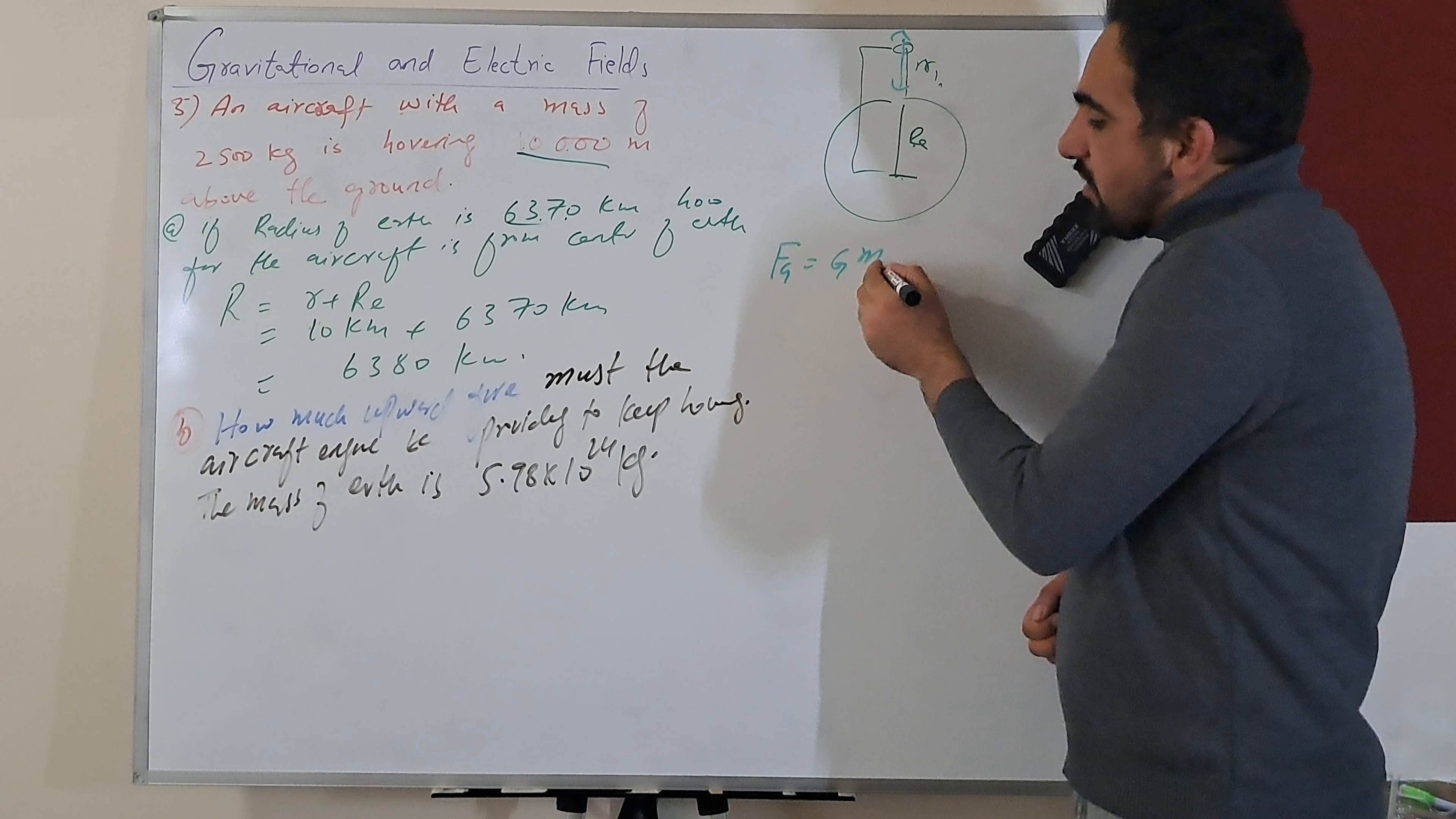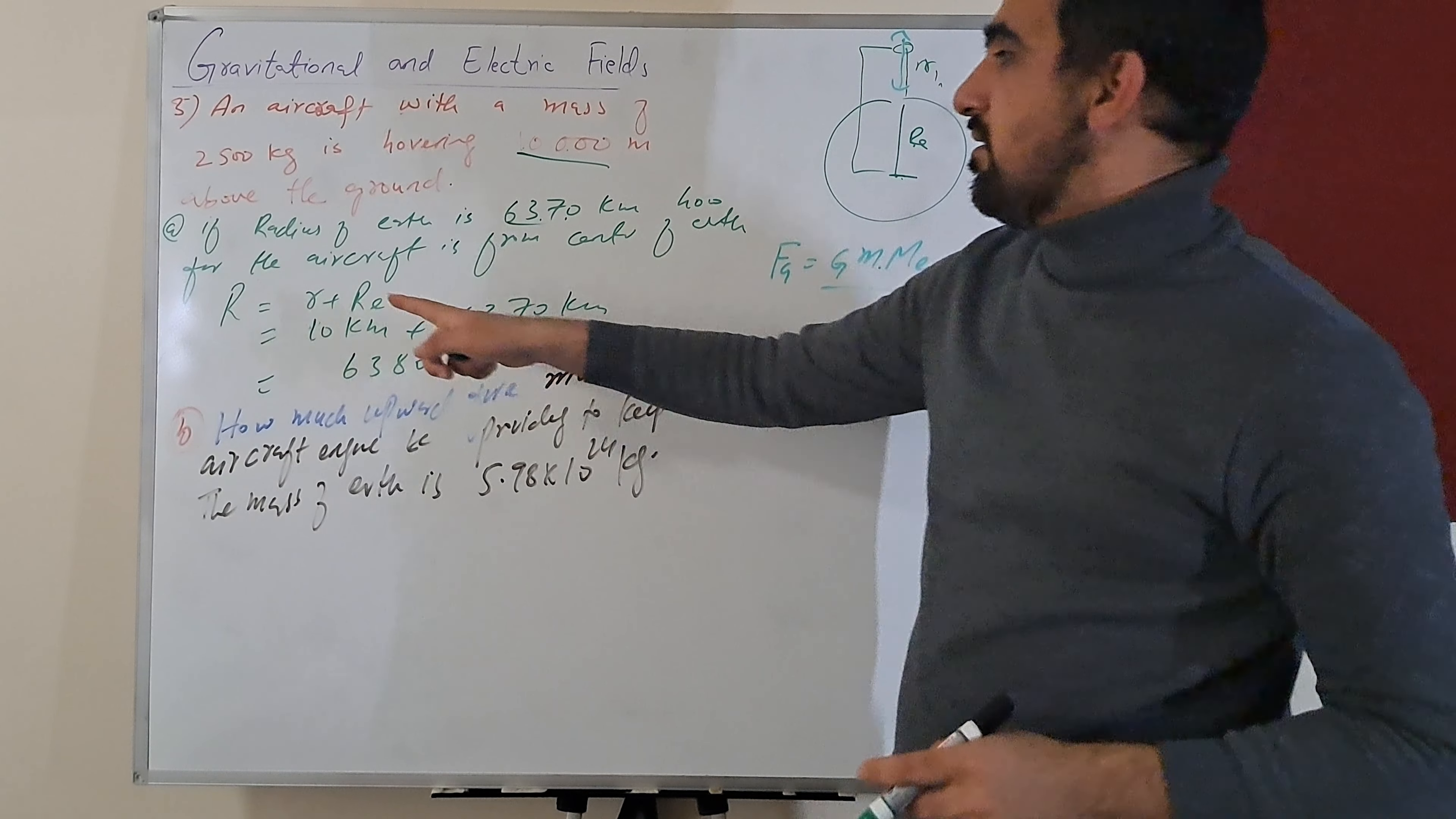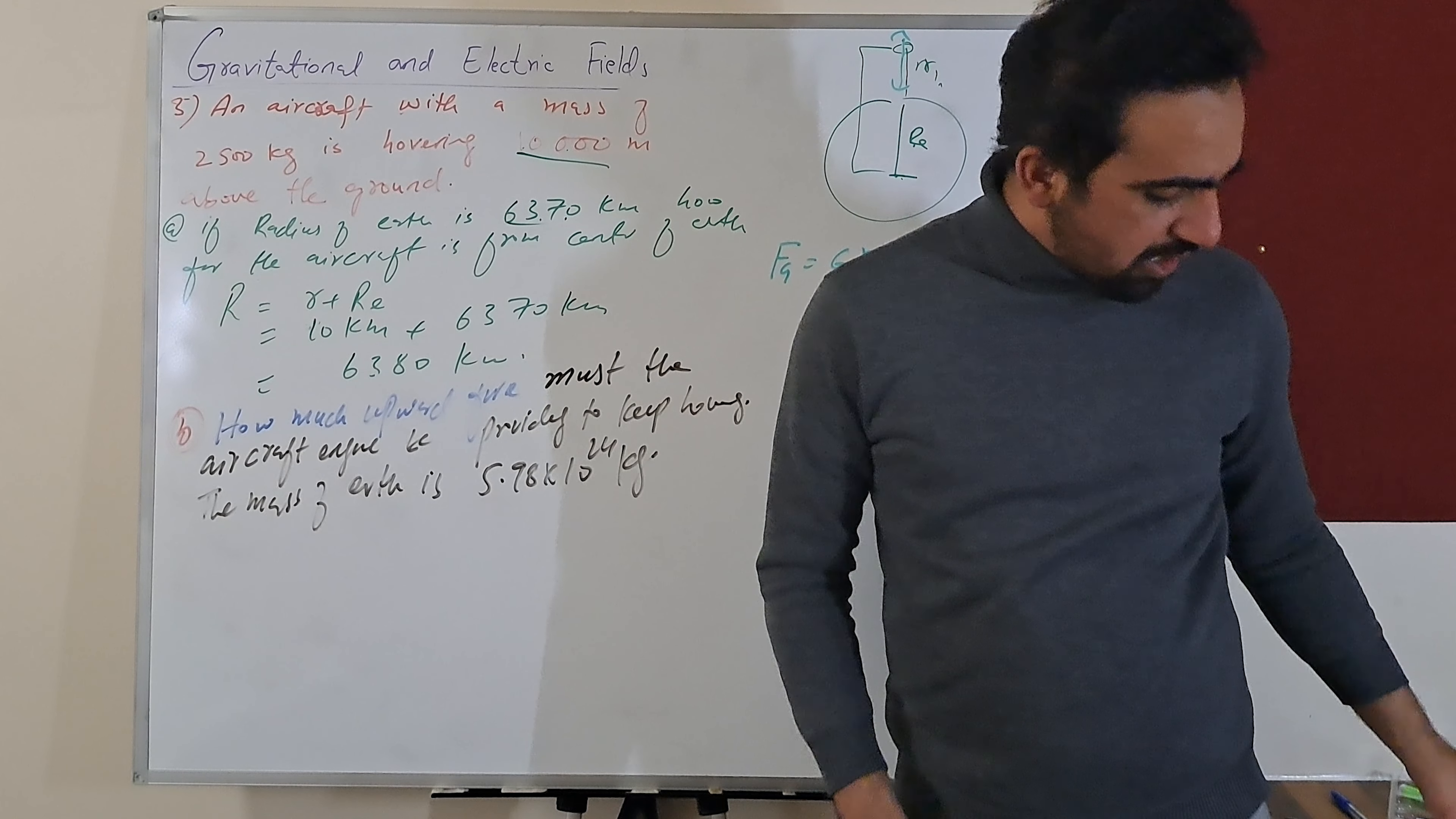We can find the gravitational force: Fg equals G times mass of aircraft times mass of Earth divided by distance between the aircraft and the center of Earth, so it's capital R squared. And we need to substitute these values now, which are: